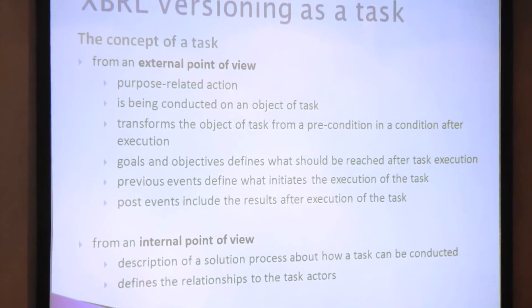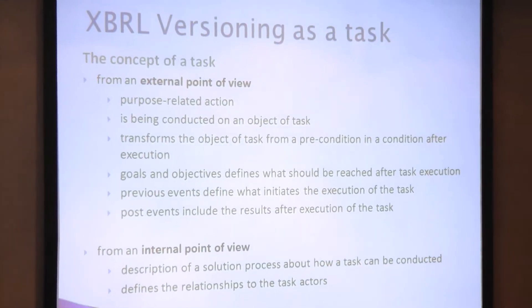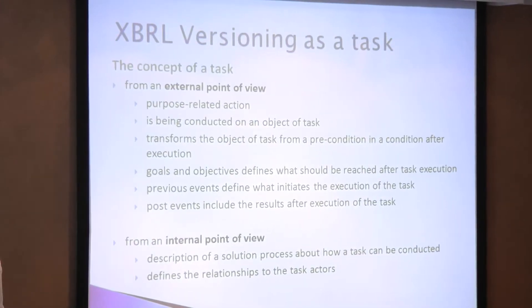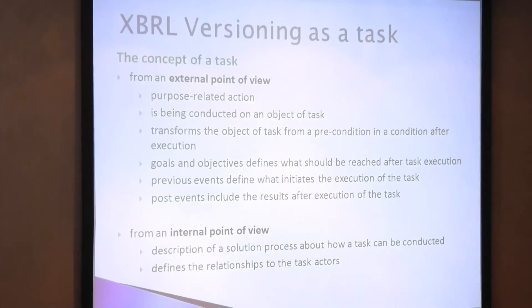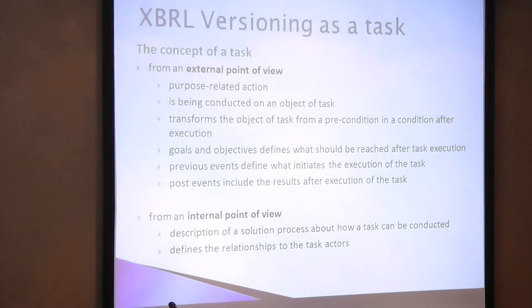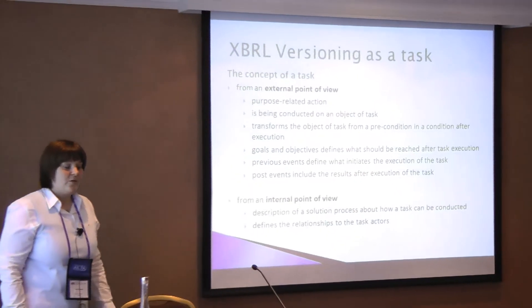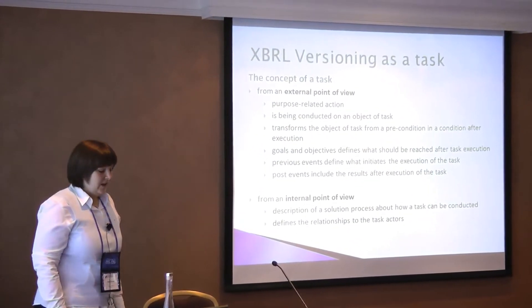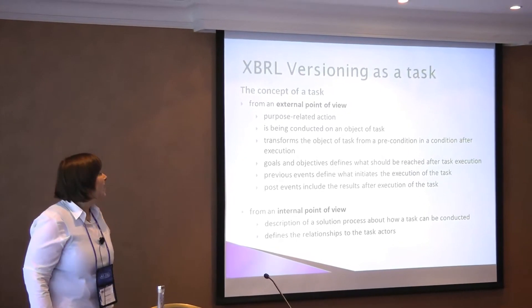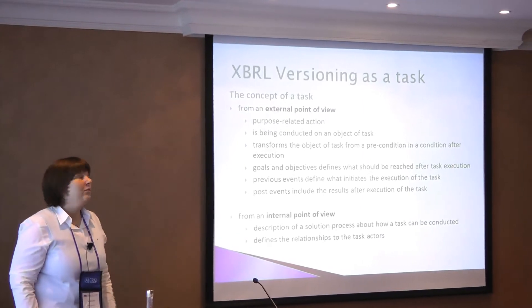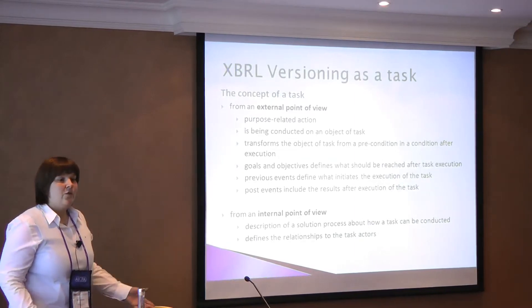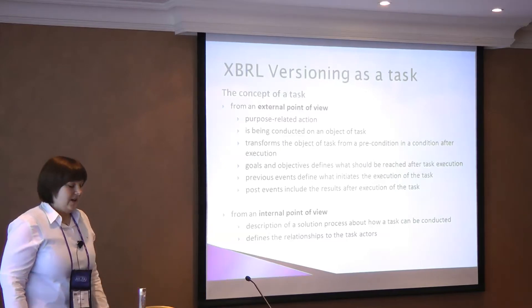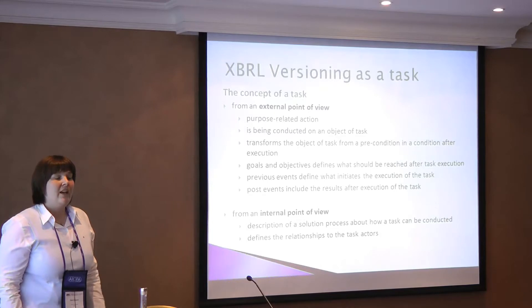Starting with versioning as a task — what is a task? A task is, from an external point of view, something related with a specific purpose. It's conducted by an object of task, by a specific action. It has a precondition before the task and a condition after its execution. It has goals and objectives that should be reached, and we can identify previous events and post events that build up the results. From an internal point of view, we have a solution process — how this task can be conducted — and this helps identify actions that can be automated.